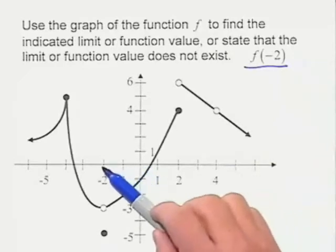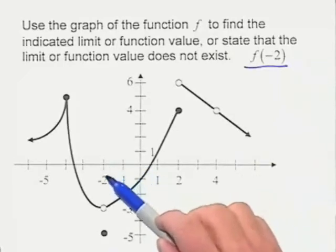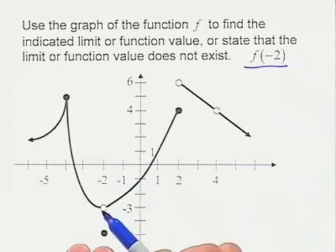So we go over to our graph here. When x is equal to negative 2, we need to determine the y value. Note that we have a hole in this part of our graph, but our actual y value in this case is equal to negative 5.